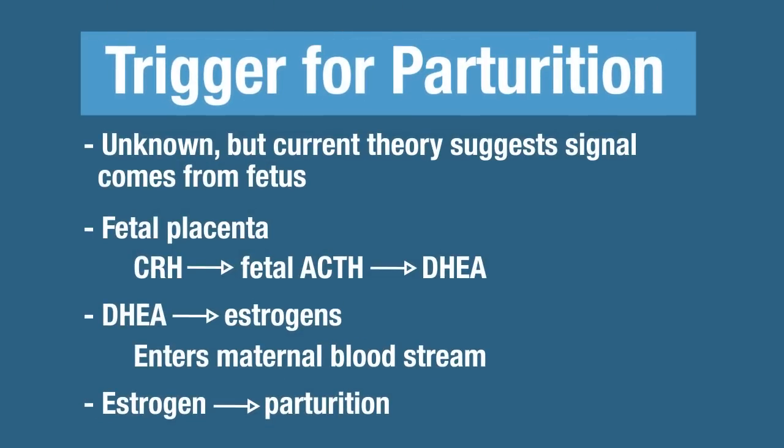What is the trigger for those uterine contractions? This is the process we're not quite sure about, but here's what researchers think is going on. They believe the fetal placenta synthesizes and secretes CRH, which then causes fetal ACTH release. This stimulates the adrenal gland to synthesize and secrete DHEA — dehydroepiandrosterone. They believe DHEA is then converted to estrogens, which enter the maternal bloodstream and initiate birth.